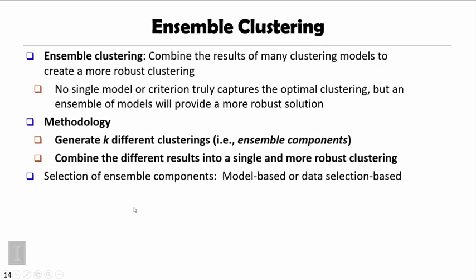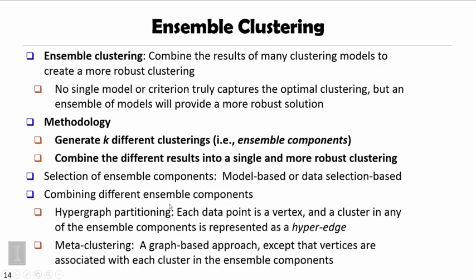To combine those different ensemble components, there are two major proposals. One is called hypergraph partitioning. Each data point is treated as a vertex, and a cluster in any ensemble component is treated as a hyperedge. The data points are linked by many hyperedges, forming a hypergraph. Performing hypergraph partitioning on this structure yields the ensembled, more robust clustering results.